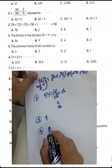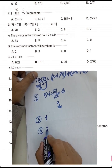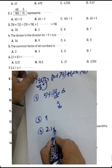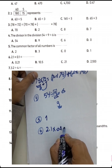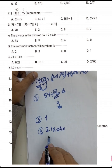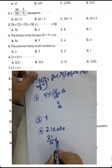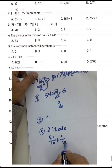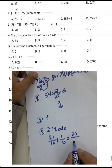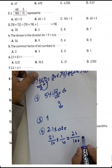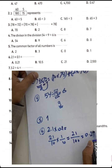Question 6: 2.1 times 0.1. We know 2.1 equals 21 over 10, and 0.1 equals 1 over 10. So 21 times 1 equals 21, and 10 times 10 equals 100. The result will be 21 hundredths, or 0.21.